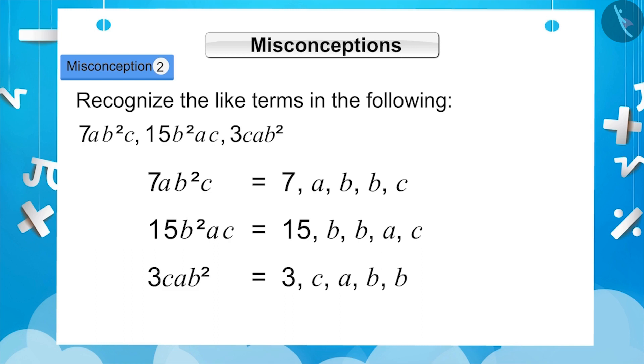It is important to note here that the variables of the three terms are a, b, b, c, but their order is different from one another. This means they are not written in proper order.